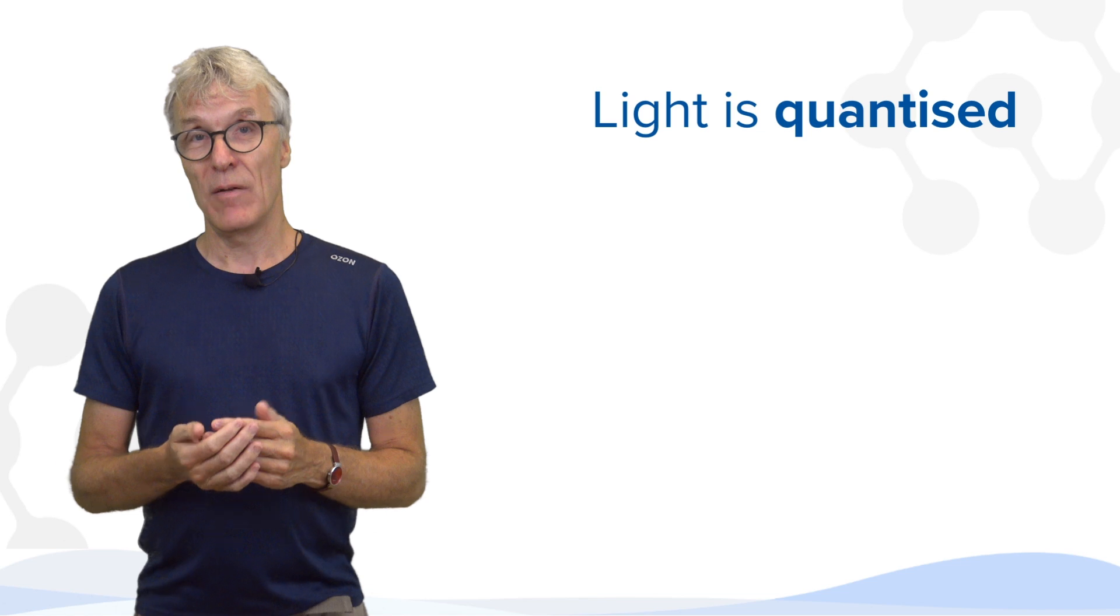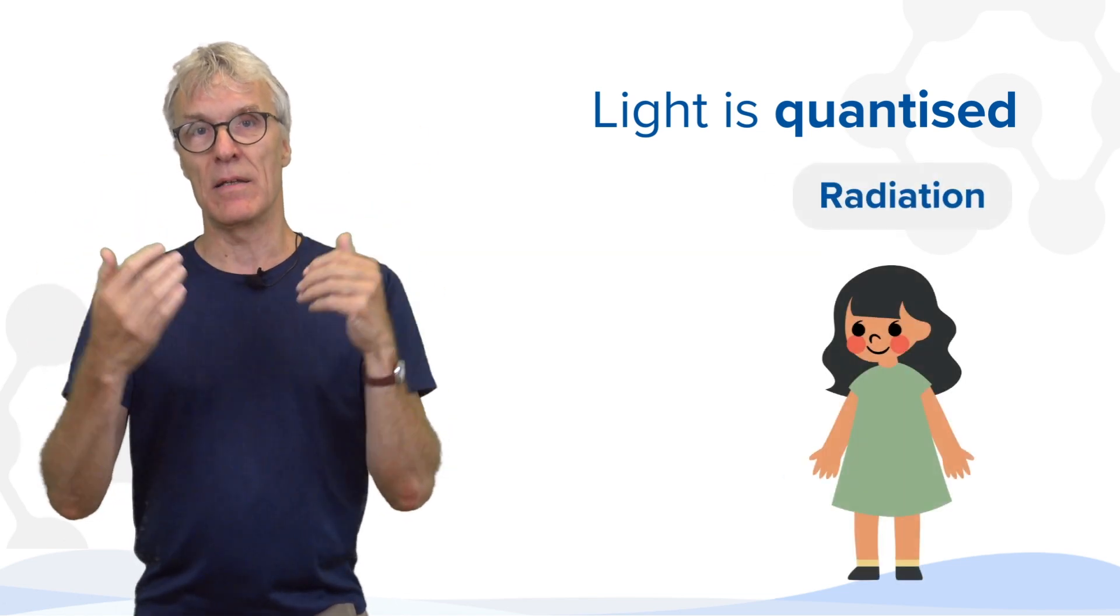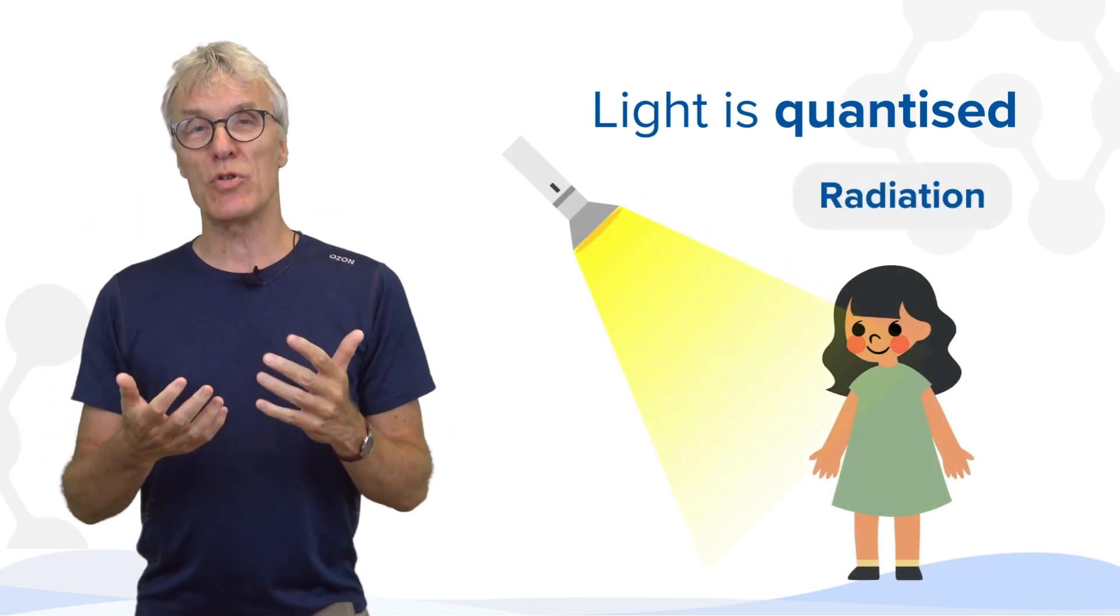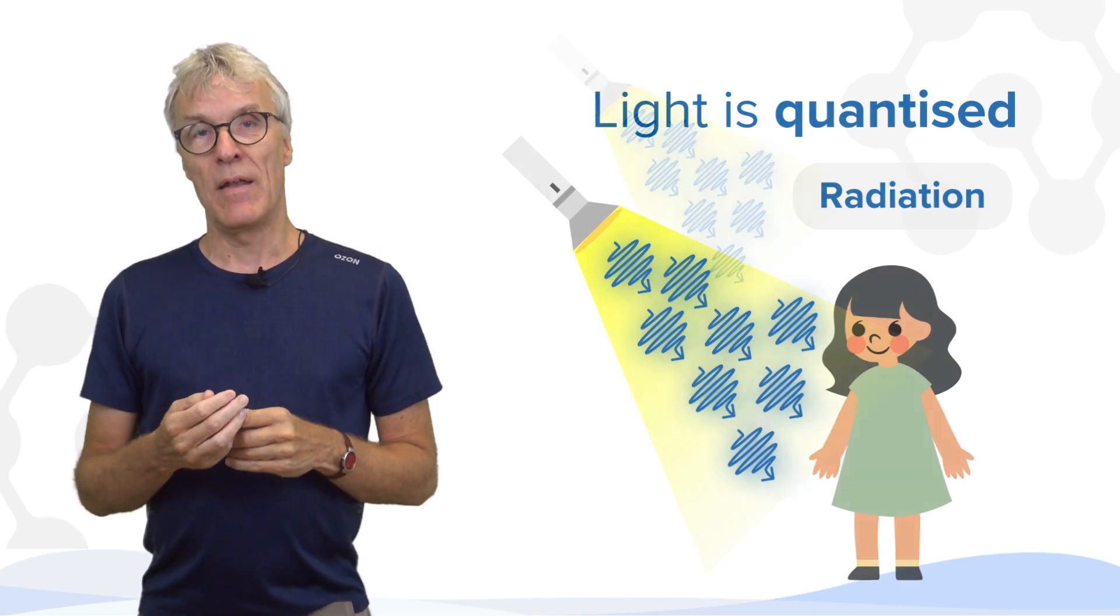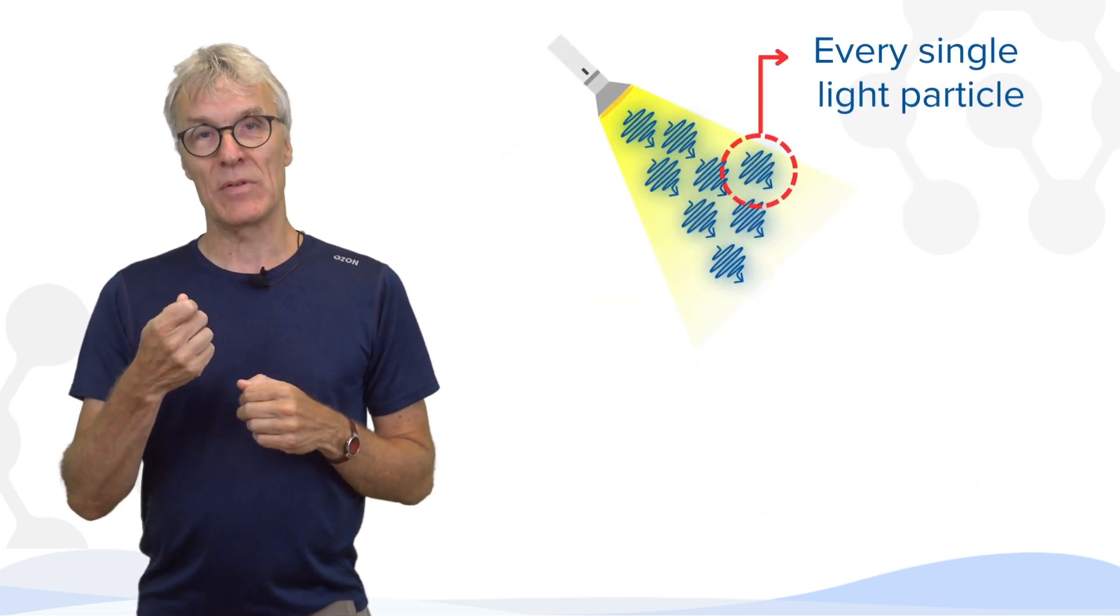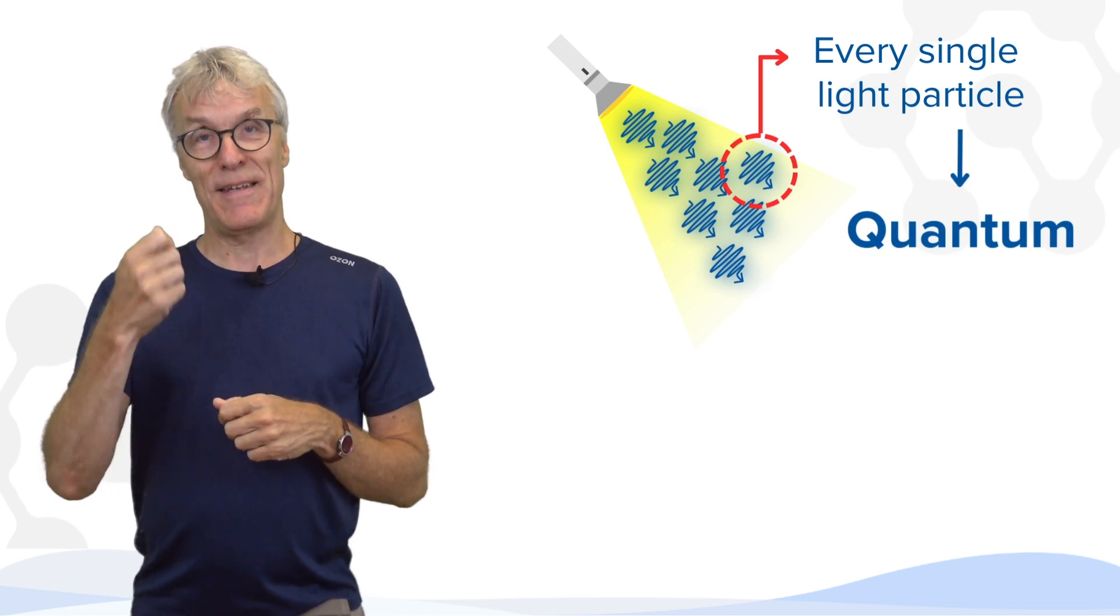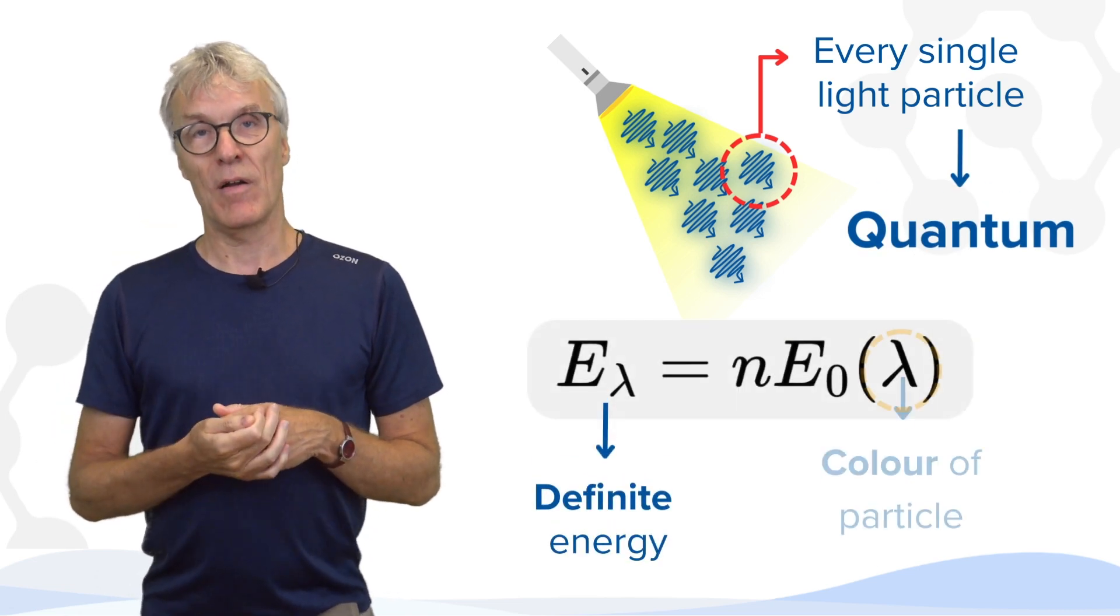Light being quantized means that when I'm hit by radiation, the light here in this room, there's actually a huge number of individual light particles that are hitting me. And every single light particle is what we call the quantum, has a definite energy that depends on the color of that particle.